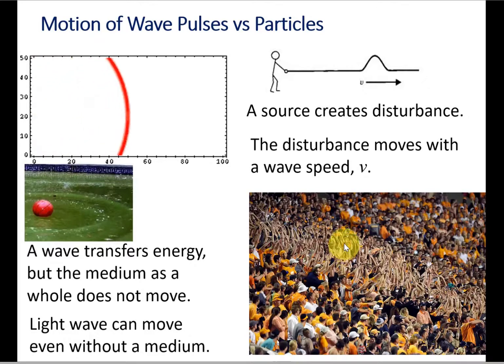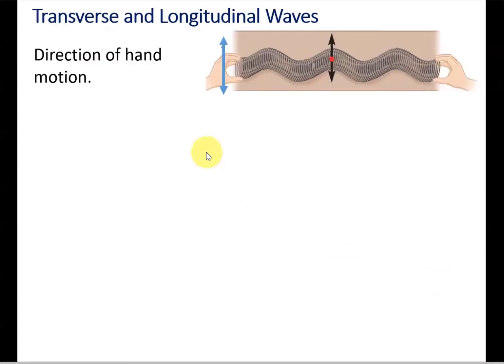Water waves and earthquake waves are also called surface waves, as they are the combination of both longitudinal and transverse waves. Depending on how a disturbance sets the particle in motion, one can divide all waves into two main types: transverse and longitudinal.